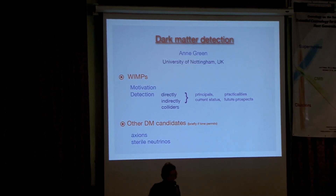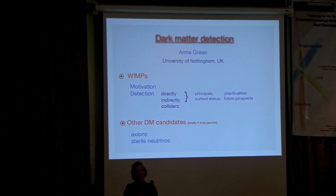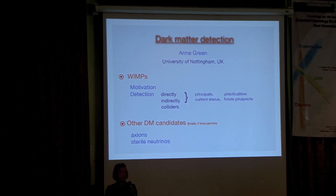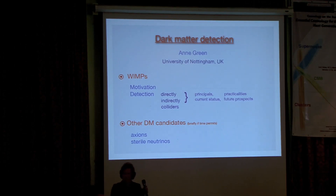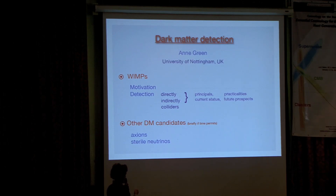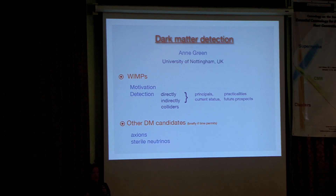I'll focus mainly on WIMPs, but if time permits at the end, I'll briefly mention some other dark matter candidates, in particular axions and sterile neutrinos, just to make the point that WIMPs aren't the only well-motivated dark matter candidate. I'm not going to go into a lot of mathematical detail, but I'll try to focus on the motivation for WIMPs, then look at detection principles, the problems when you actually try to do this in practice, the current status, and what progress we can expect over the next few years.